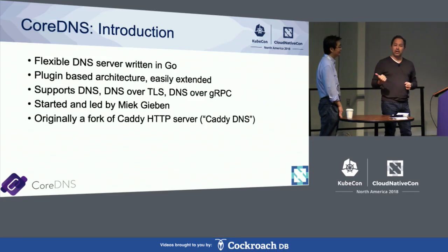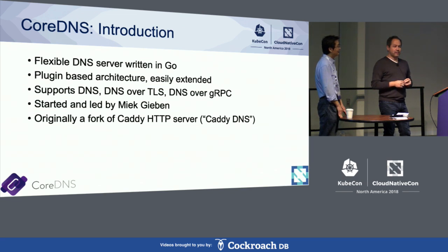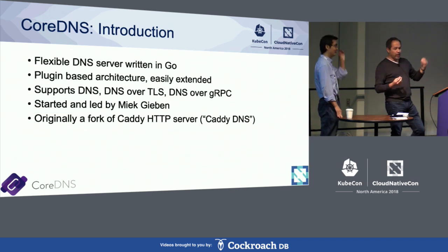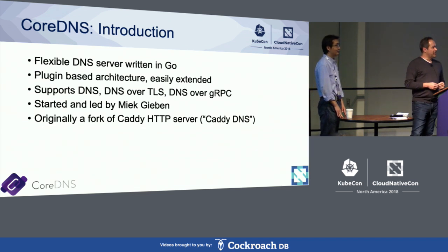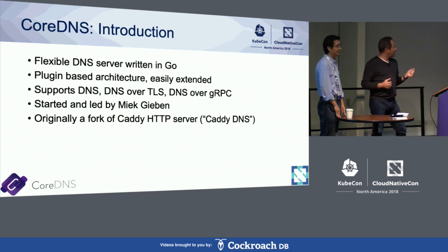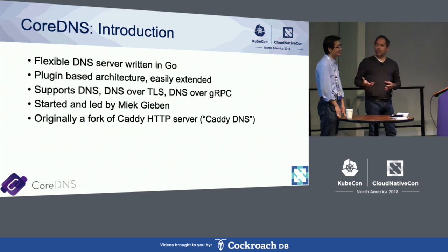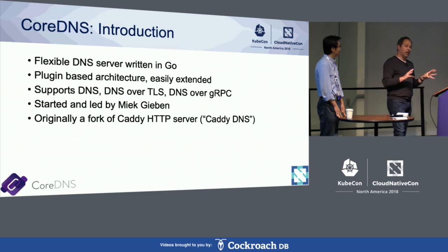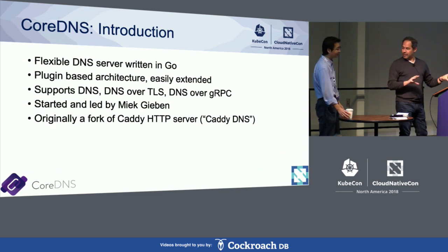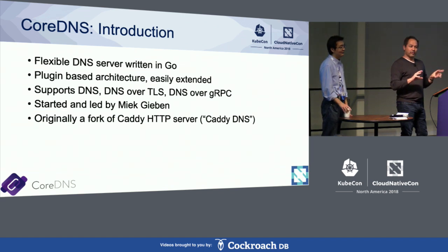CoreDNS supports DNS, of course, but also DNS over TLS and DNS over gRPC. DNS over TLS is called DOT for short nowadays — that's all the rage among the cool kids. So if you want to set up your own recursive DNS server and run DOT between your Android P phone and the recursive DNS server, this is one way to do it. It was started and led by Miek Gieben, a Dutch guy who lives in London and now works for Goldman Sachs. He combined his Go DNS library with the Caddy web server architecture, and out came CoreDNS.